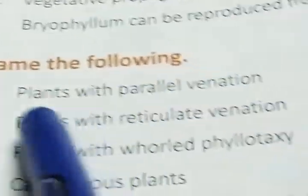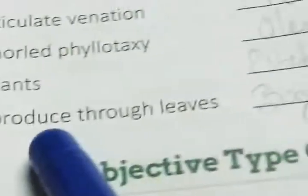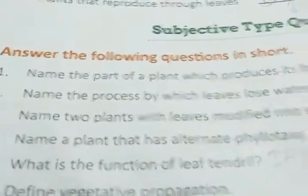Next, name the following: plants with parallel venation — examples are wheat and paddy. Plants with reticulate venation — answer will be mango and neem. Plants with whorled phyllotaxis — example: oleander and Indian cucumber. Next, carnivorous plants — examples: pitcher plant and venus flytrap.